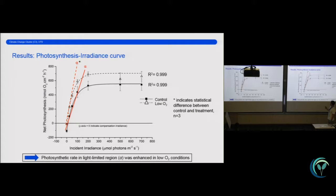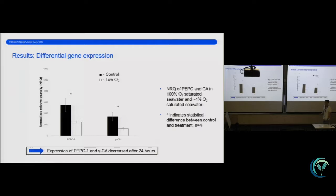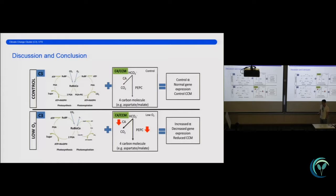The solid circles are the control. The open triangles are the low oxygen treatment. And what we found was after a period of 24 hours, essentially the alpha, or the initial slope of the curve, was enhanced under low oxygen conditions. Similarly, when we performed the RT-QPCR, we found a significant difference within the normalized relative quantity of the two genes, PEPC and CA. And as you can see here, compared to the control, there was a significant decrease in these two genes.